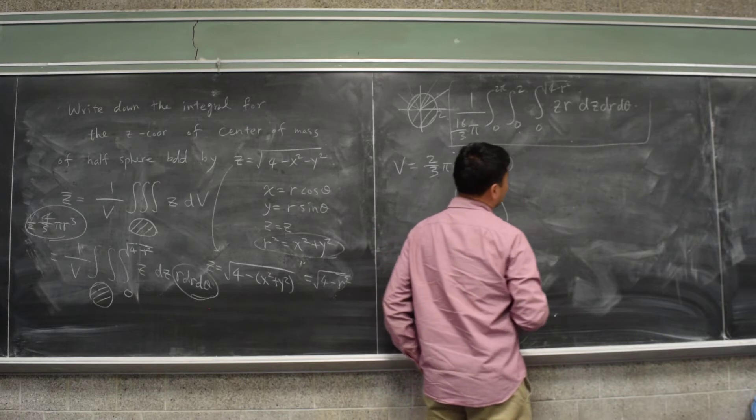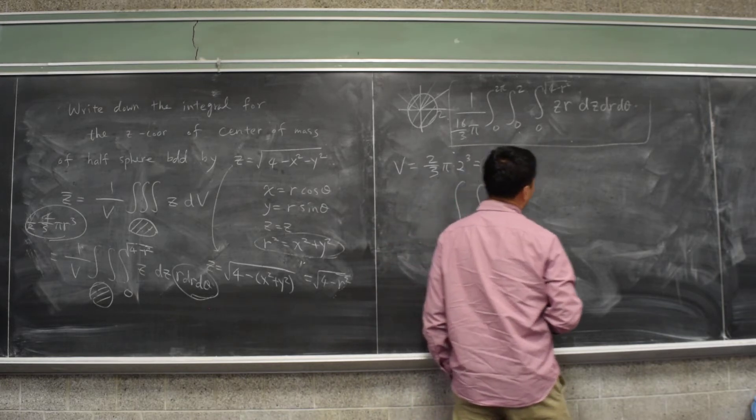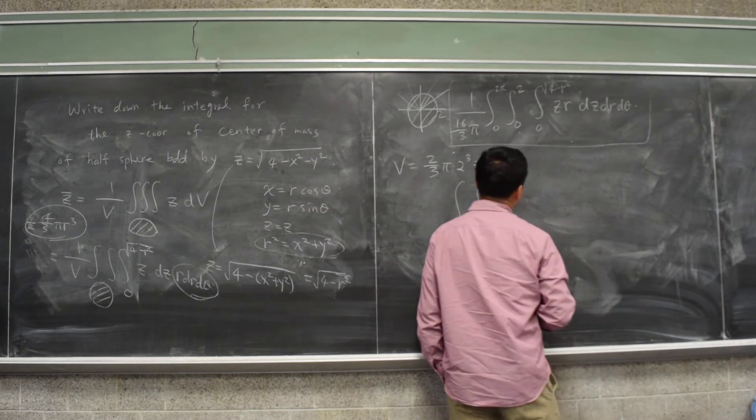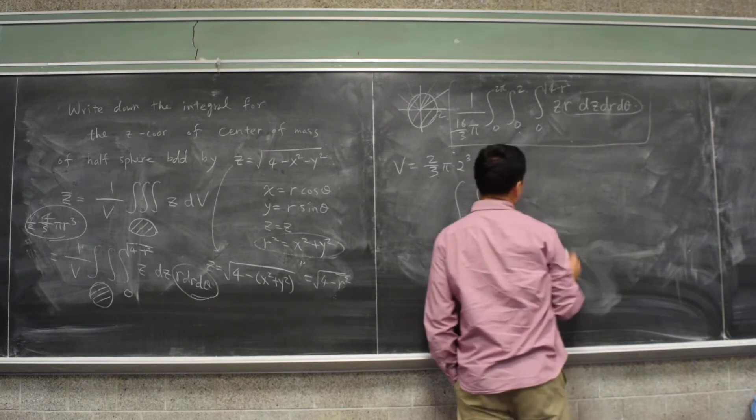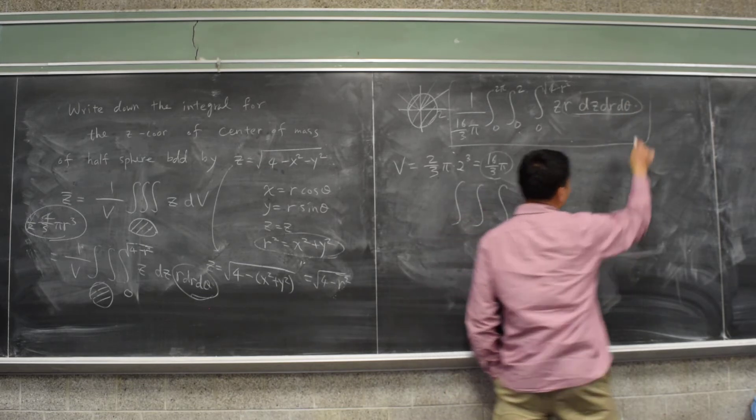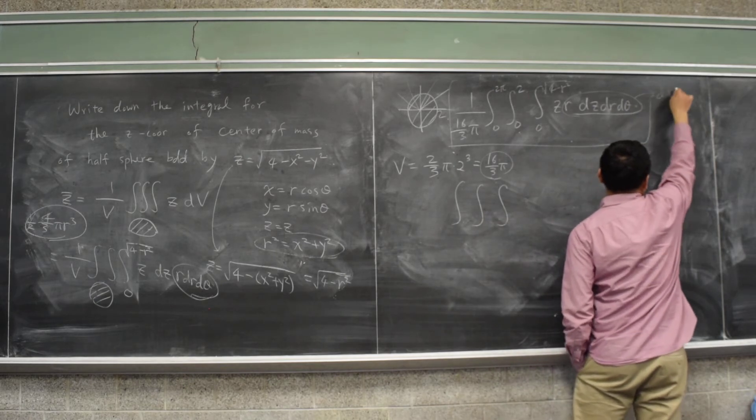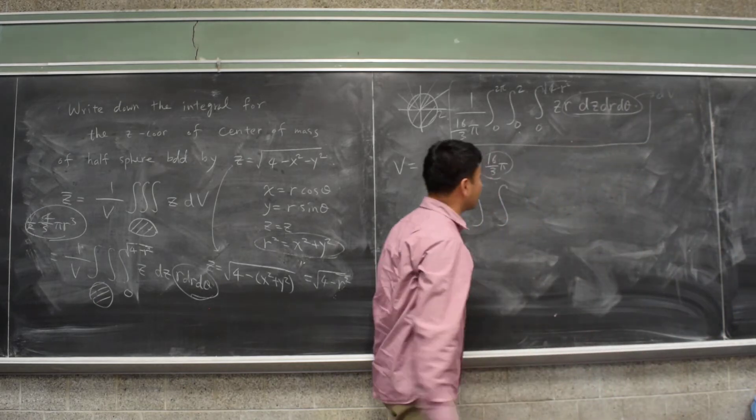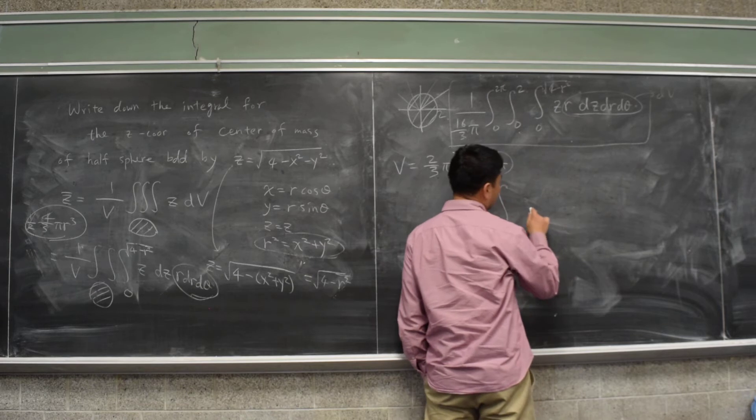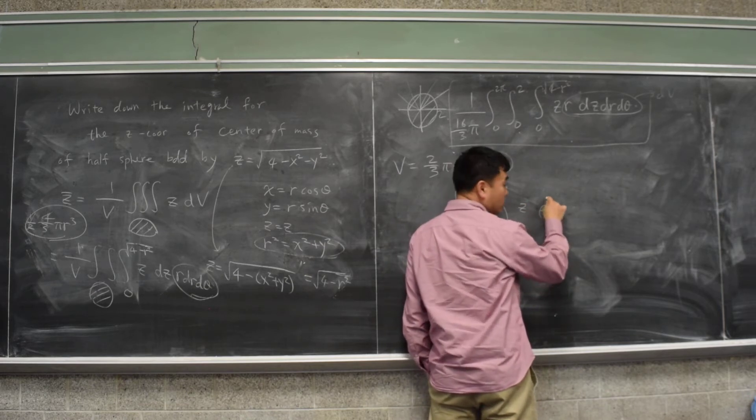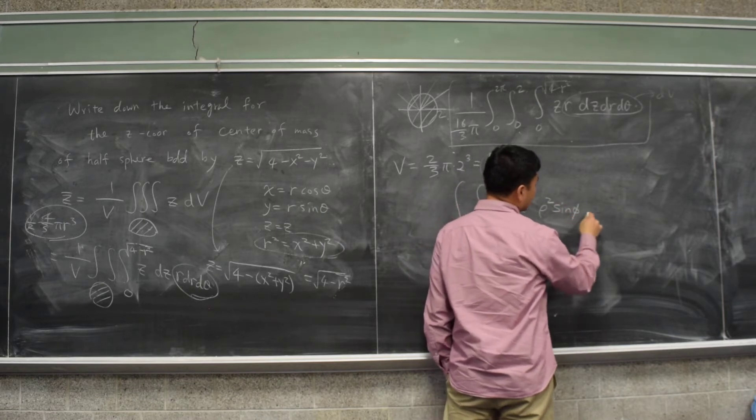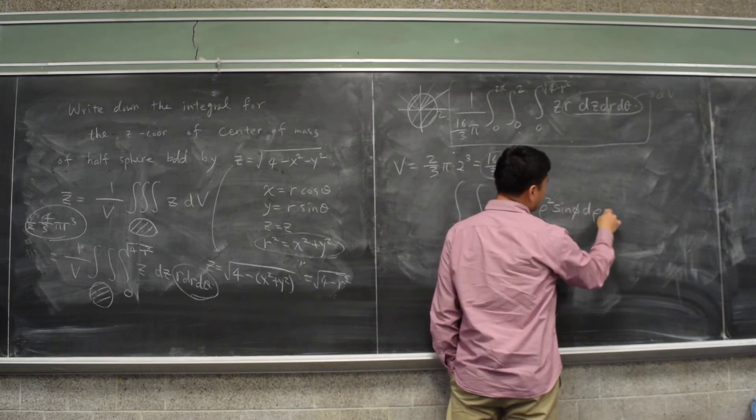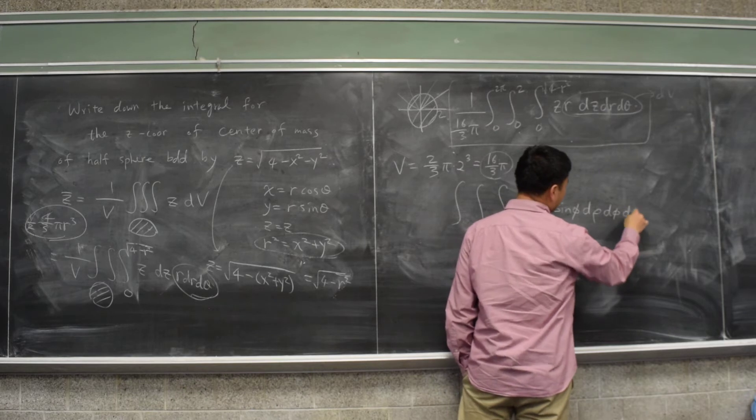So if you write down the integral, here's what we do. First, this thing, including the r, that's what we call dV. Now in spherical coordinates, what does that turn into? Rho squared sine phi d rho d phi d theta.